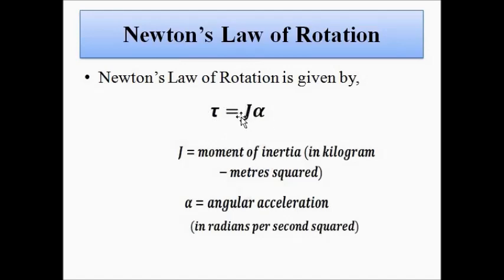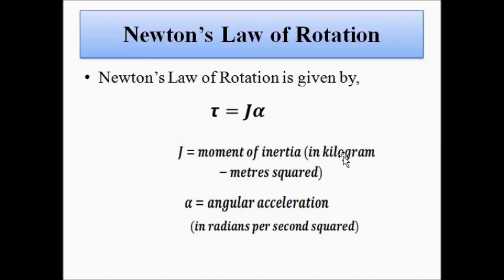To summarize: in linear motion, Newton's second law is F = ma. In rotational motion, Newton's law is τ = Jα, where tau is torque, J is moment of inertia, and alpha is angular acceleration. The unit of moment of inertia is kilogram-meter squared (kg·m²).